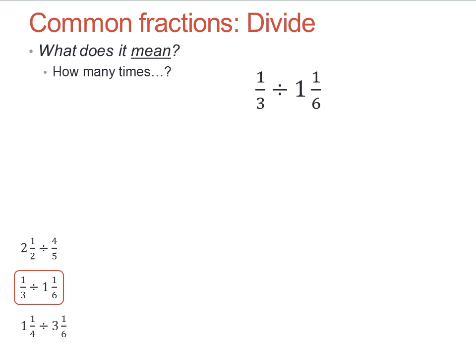One-third divided by one and one-sixth. Convert one and a sixth to an improper fraction. Seven-sixths. Now think carefully. What size pieces should I use to get both of these fractions to have pieces the same size?